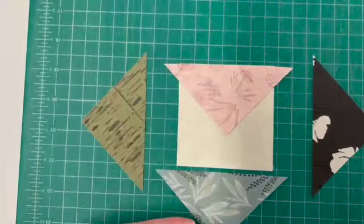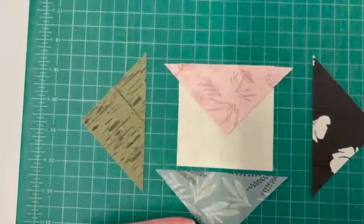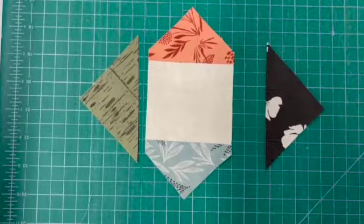Once I've done that I'm going to press these out. Away from my light center and I'm going to trim along each side here to get rid of those little tails. So I'll come back to that once I have gotten to that point.